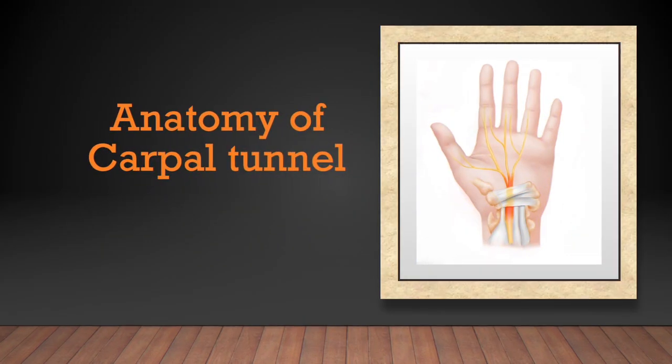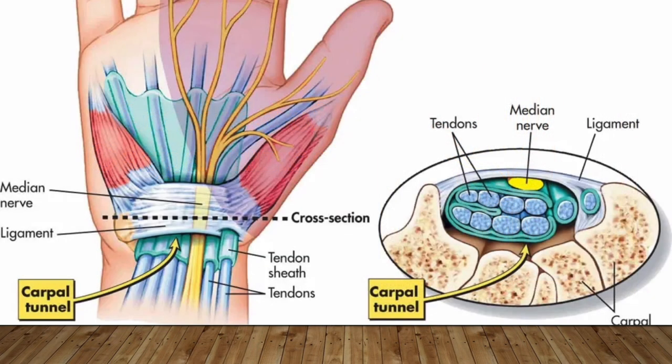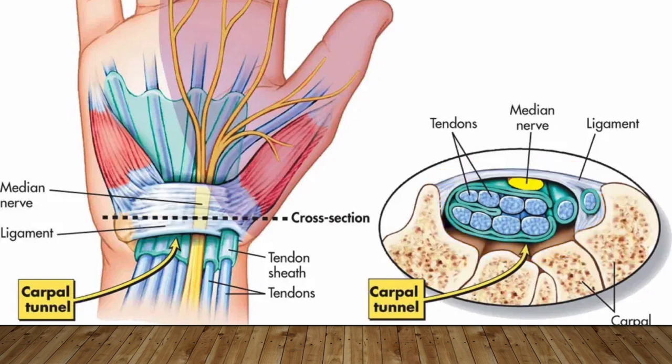Before the main course, I'll review carpal tunnel syndrome first. The carpal tunnel comprises a bony duct-like structure consisting of carpal bones, the roof of which is the fibrous but rigid transverse carpal ligament.